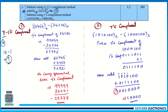The 9's complement is found by subtracting the number from all 9s. For example, the 9's complement of 1234 is 9999 − 1234. Here, b is 34234, so subtracting from 99999 gives us 65765 as the 9's complement of b.